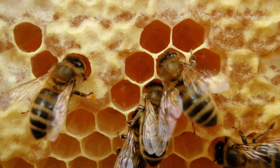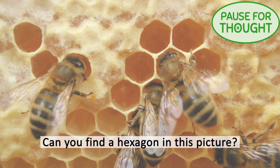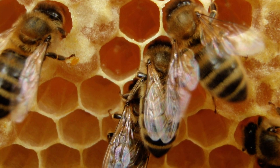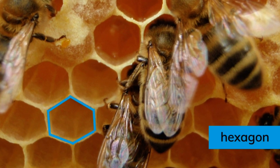This is a hive where bees make honey. Can you find a hexagon in this picture? Every little cell in the hive is in the shape of a hexagon.